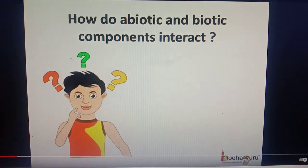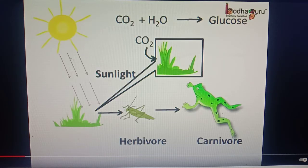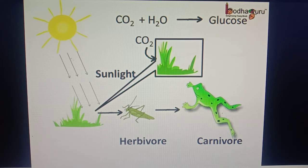Now that you know the biotic and abiotic components of the environment, let us see how they interact. Let us start with food. The plants make food using carbon dioxide, water and sunlight during the photosynthesis process.